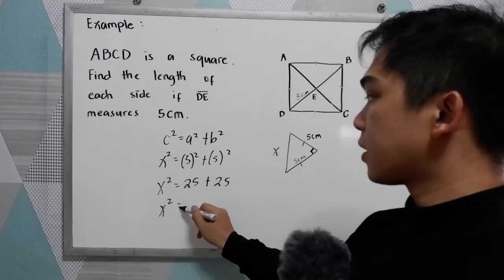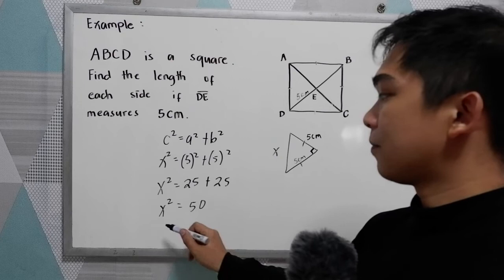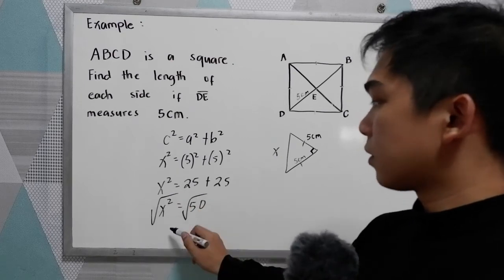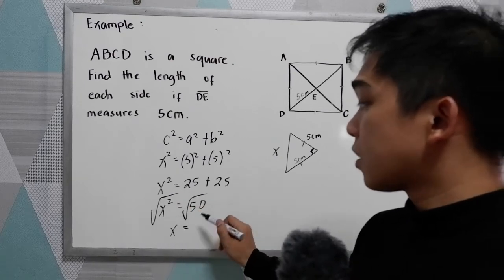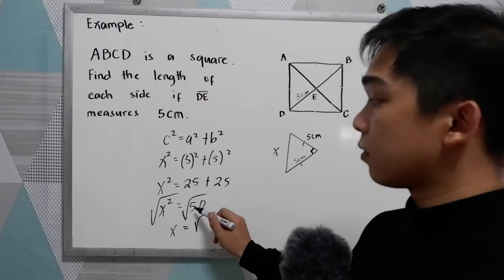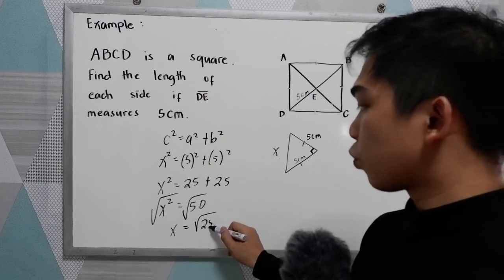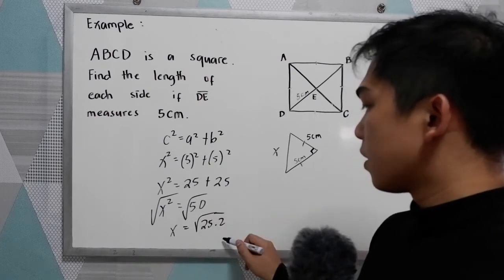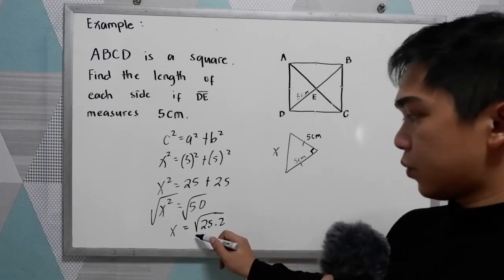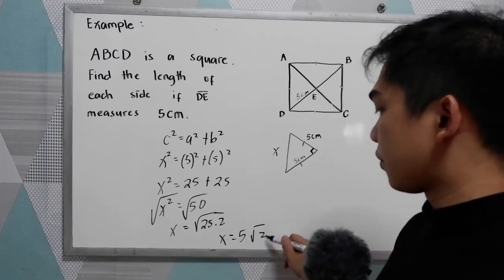x squared is equal to 50. Get the square root. x is equal to the square root of the factors of 25 are 25 times 2. So x is equal to the square root of 25, that is 5, times the square root of 2.